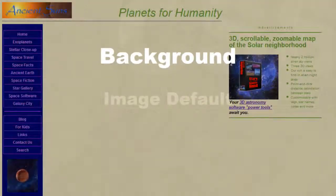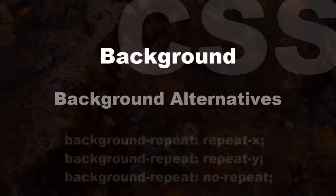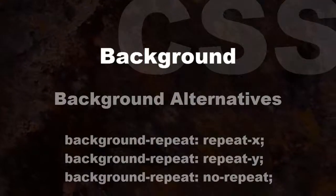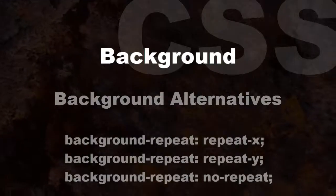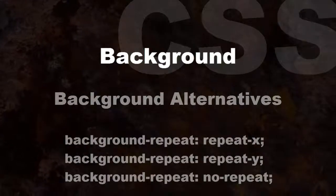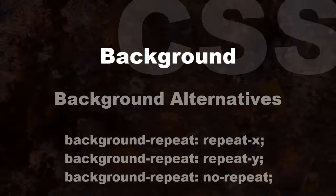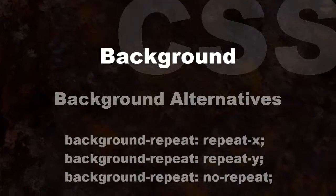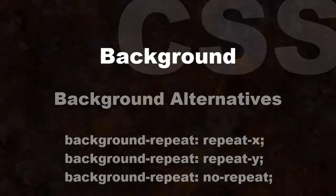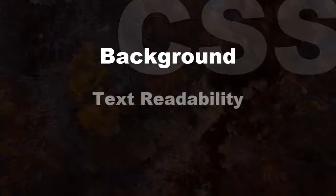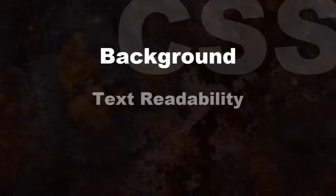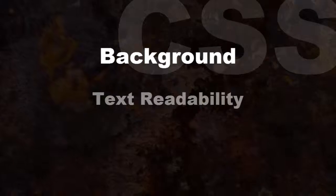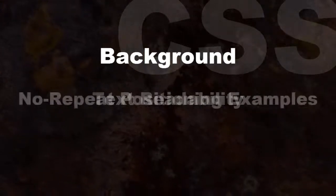Repeating in both X and Y directions is the default. You can use background-repeat: repeat-x to repeat horizontally, background-repeat: repeat-y for vertically, or background-repeat: no-repeat to turn off repeating altogether. Be kind to your visitors — if you have text over your background, make sure the background image does not disturb the readability of the text.